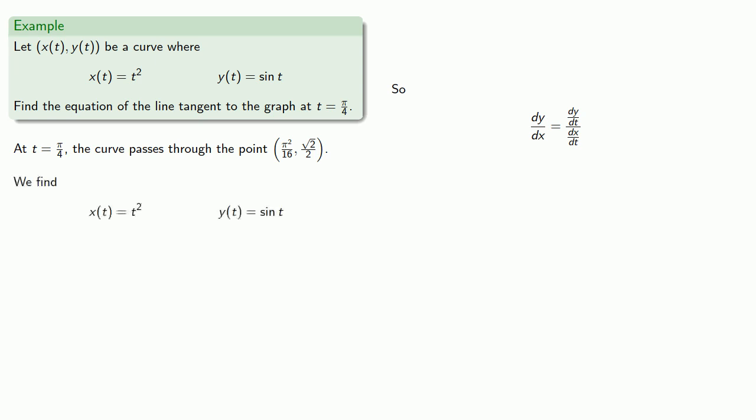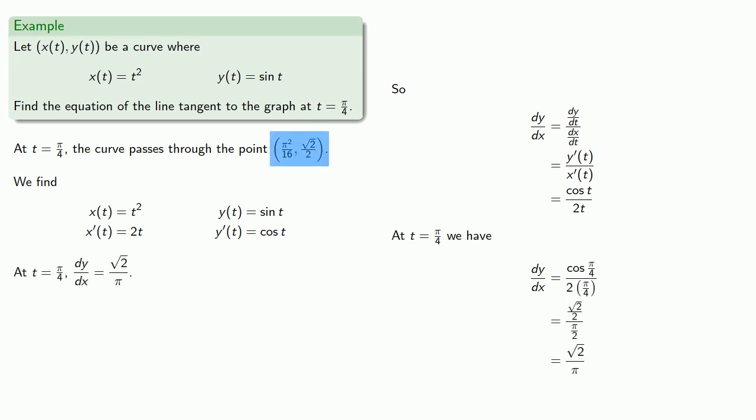And so dy dx will be... And at t equal to pi fourths, dy dx will be... And so I have a point on the line, I have the derivative, and I can now find the tangent line.